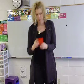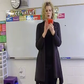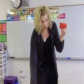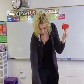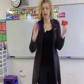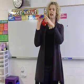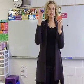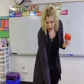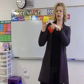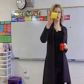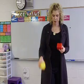Prisms have the same shape on both sides. For example, this is a rectangular prism, and we would have a triangular prism. This one has hexagons on both sides, so it's a hexagonal prism.